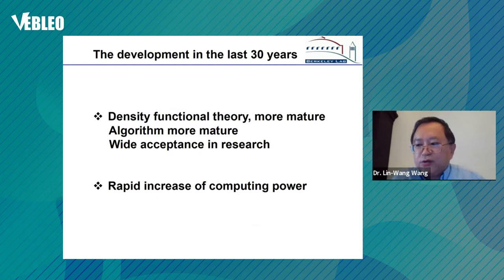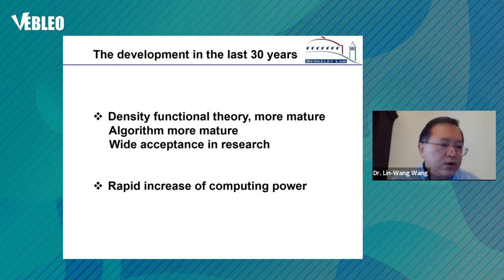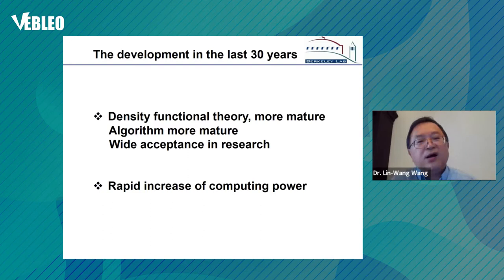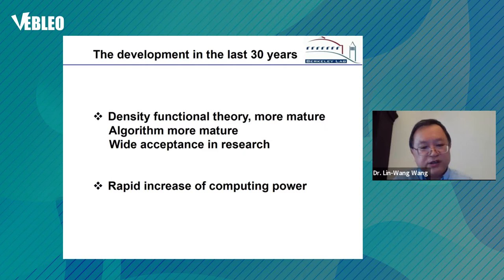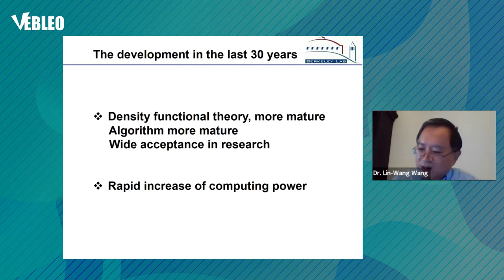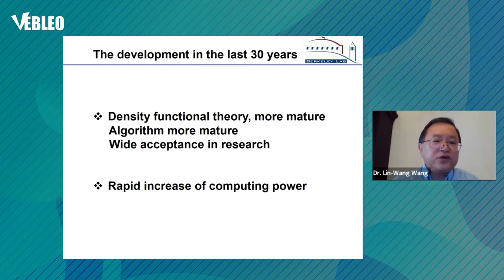The development of ab initio materials science simulation over the last 30 years has been driven by two things. First, density functional theory has become more mature — we know in what cases it works and in what cases it doesn't, and we have methods beyond DFT like GW and dynamical mean-field theory. Second, algorithms have improved, systems have grown larger, and there has been wide acceptance in the academic research community, making ab initio computation an essential component of materials science research.